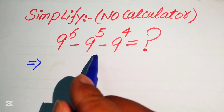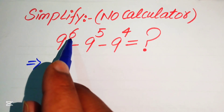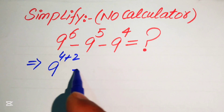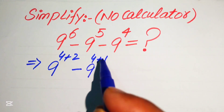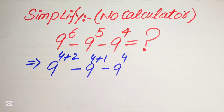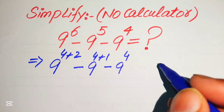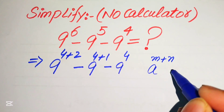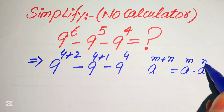The very first thing we are going to do is rewrite this algebraic expression. We have 9 to the power of 6 and we break this 6 as 4 plus 2, minus 9 to the power of 5 written as 4 plus 1, and minus 9 to the power of 4. We need a nice exponential formula: a to the power of m plus n equals a to the power of m multiplied by a to the power of n.